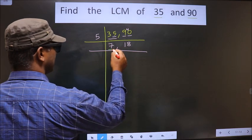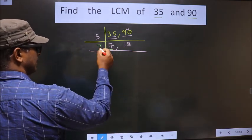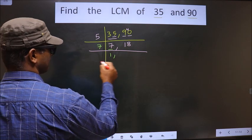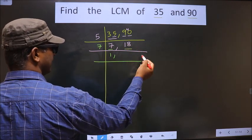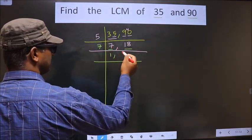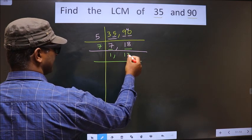Now, here we have 7. 7 is a prime number, so we take 7 once 7. Here we have 18. 18 is not divisible by 7, so you write down 18 as it is.